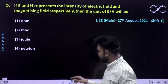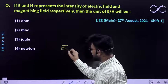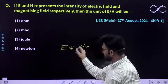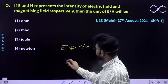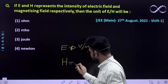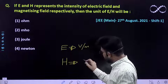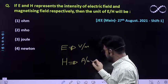We know that electric field is represented by volt per meter. It has a unit of volt per meter, and magnetizing intensity has a unit of ampere per meter.